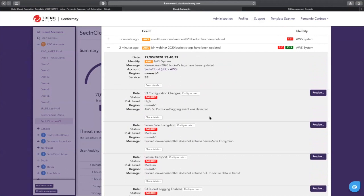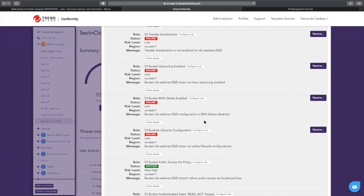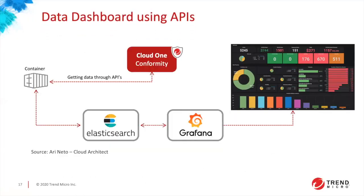When we did the scan, we found a couple of issues associated with this specific bucket. Going to Conformity and opening the environment, you can see that IDE webinar 2020 was just created and has some specific problems — immediate vulnerabilities and a couple of other things. The good point is you're not just seeing vulnerabilities in the IDE or the CI, but also monitoring real-time changes in your cloud infrastructure. Customers are also creating their own dashboards using our APIs — getting data using a simple container and pushing it to Elasticsearch and Grafana systems.